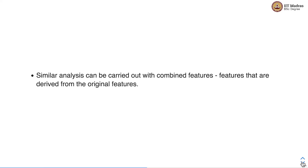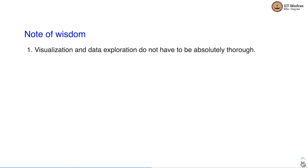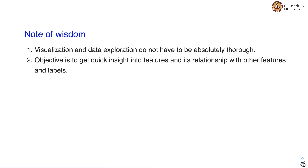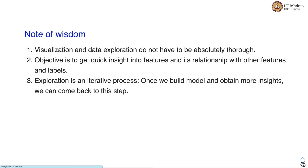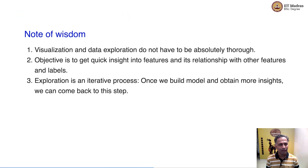Similar analysis can be carried out with combined features — features derived from the original features. A small note of wisdom: visualization and data exploration do not have to be absolutely thorough. The objective is to get quick insight into the features and their relationships with other features and the labels. Exploration is an iterative process — once we build a model, we obtain more insights and can come back to the exploration step if necessary. That is all from the data visualization process. In the next step, we will look at how to prepare the data for training.